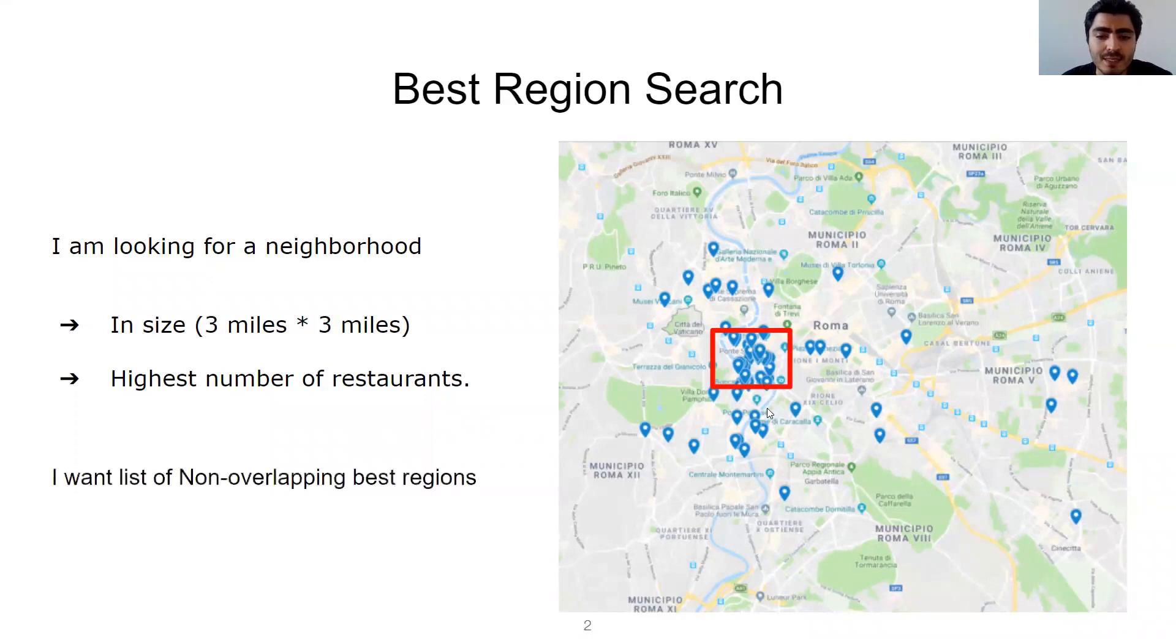This problem can be extended to detect a list of non-overlapping best regions. And in that case, these blue regions are the top next results.